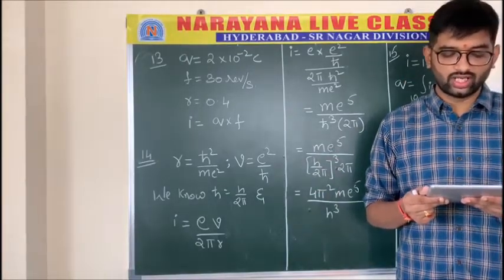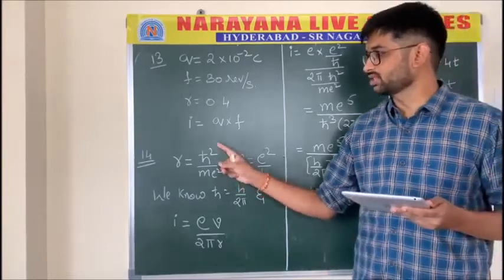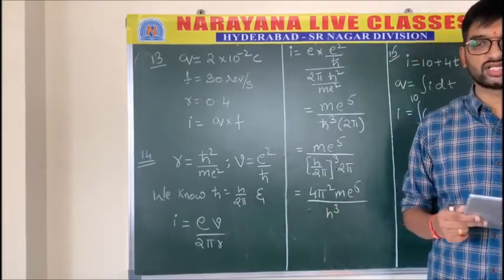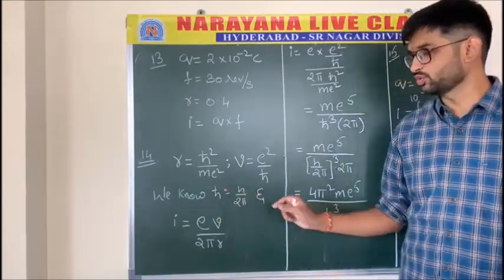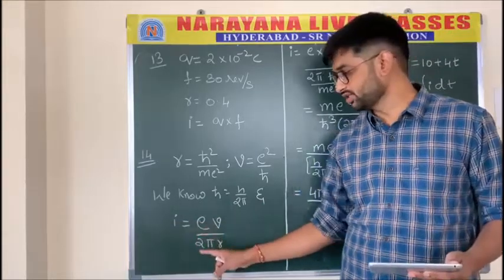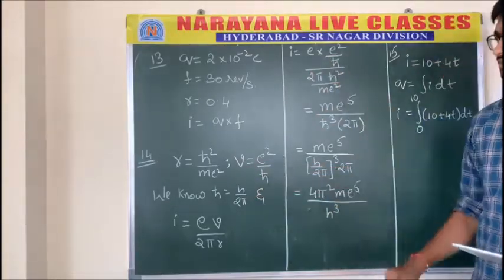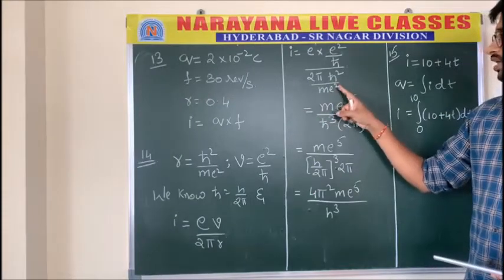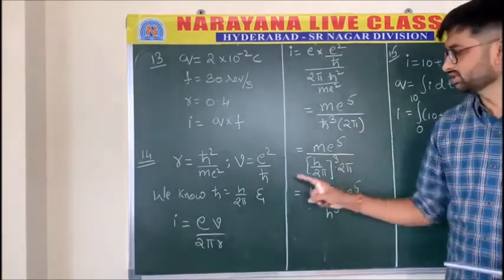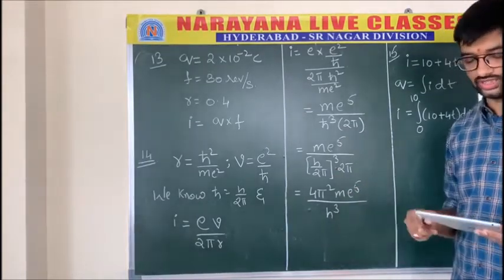Problem number fourteen: in the hydrogen atom, the electron revolves around the proton in a circular orbit of radius r = ℏ²/me², and velocity v = e²/ℏ. Find the expression for current. The equivalent current is I = ev/(2πr). Substituting v = e²/ℏ and r = ℏ²/me², and replacing ℏ = h/2π, we get the final answer: 4π²me⁵/h³, which is the fourth option.